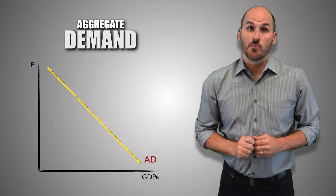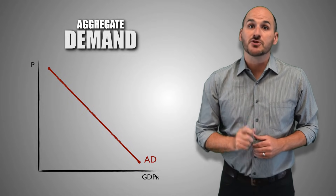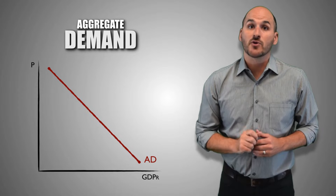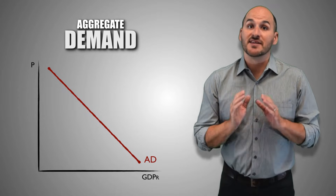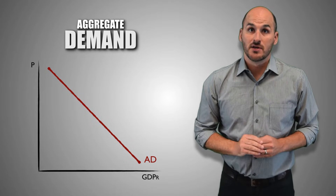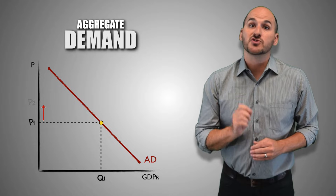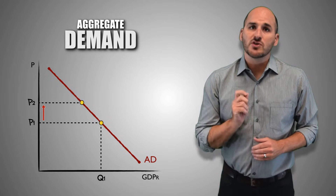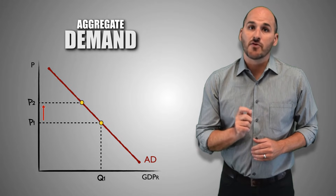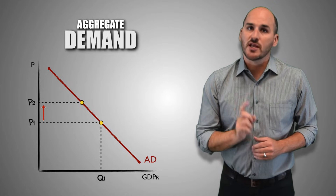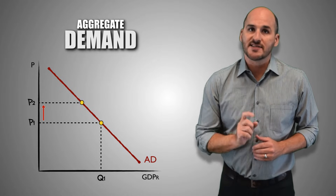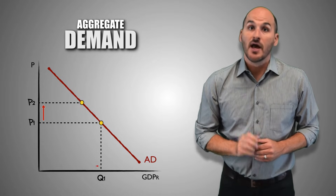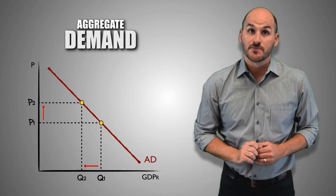Notice that it is downward sloping, implying that the relationship between aggregate price levels and aggregate real GDP output demanded is inverse. This means as prices rise due to inflation in the aggregate economy, consumers, firms, government, and foreign consumers are less willing or less able to purchase the same quantity of real GDP output, and therefore they buy less.